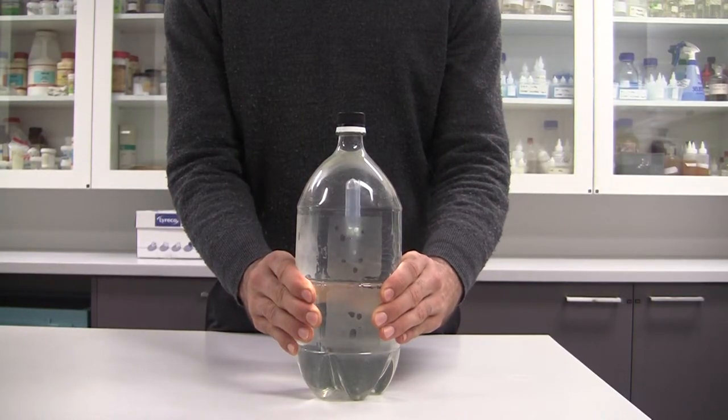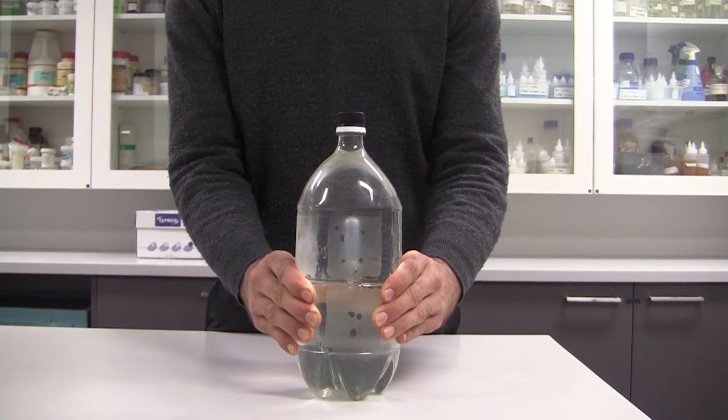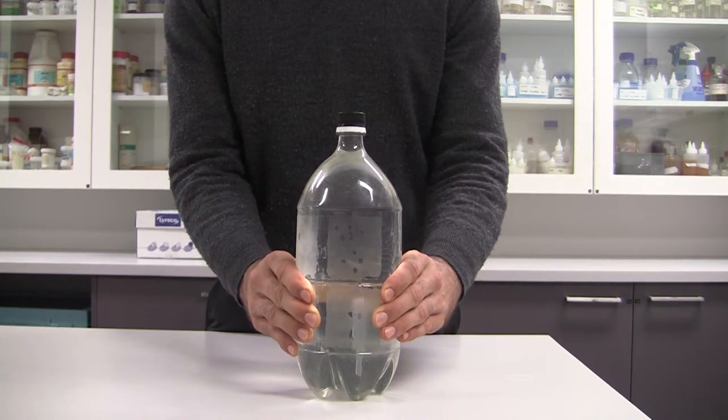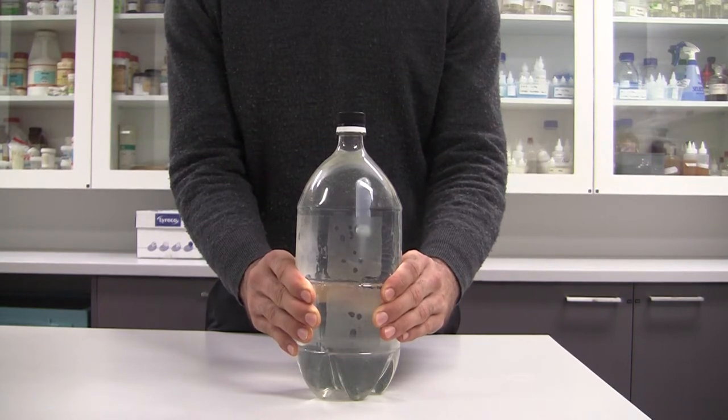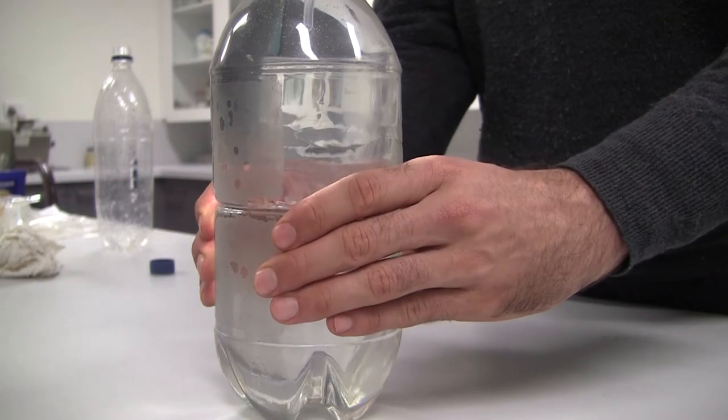You can release the pressure, which increases the volume inside the pipette, and the pipette floats back up. You can squeeze it just enough so that the density of the Cartesian diver is exactly the same as the water, and it floats in the middle or wherever you've stopped it.